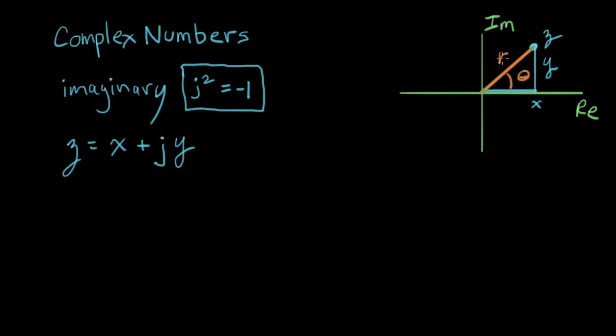So in the orange is r and theta, and in the blue here we have x and y, and those are two different ways to represent exactly the same number z. So over here I can say z equals r at some angle theta.